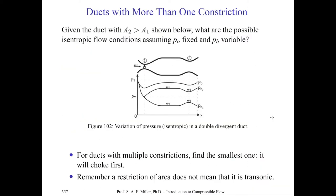Supersonic wind tunnel operation is nothing more than a stream tube or duct with varying cross-sectional areas and two particular throats ideally. At minimum you need at least one throat to become supersonic from the plenum, but you want to have a second throat. We'll start analyzing these types of problems with isentropic flow theory.